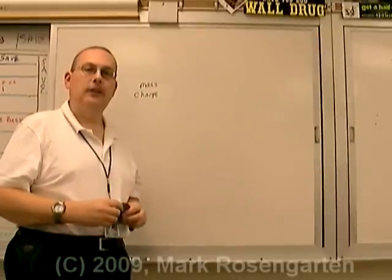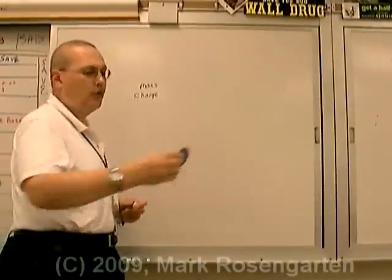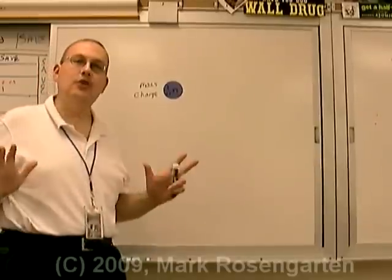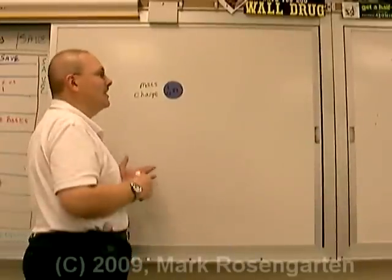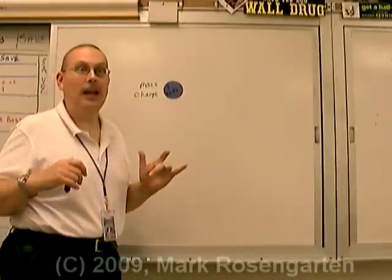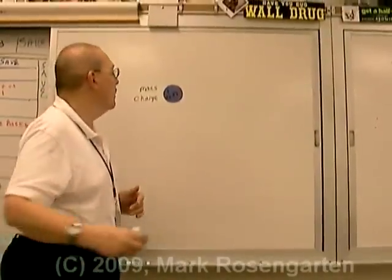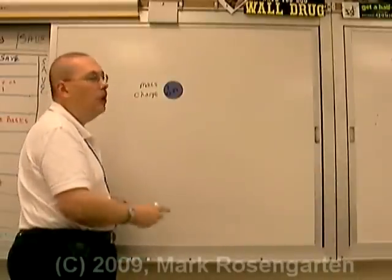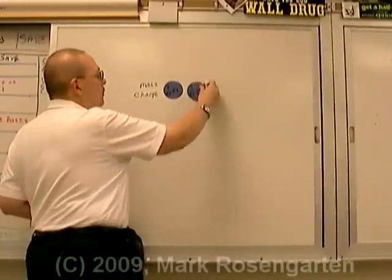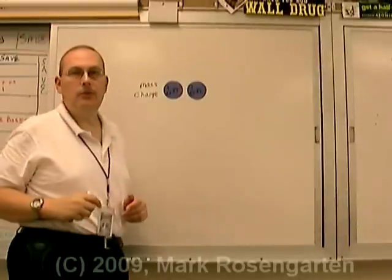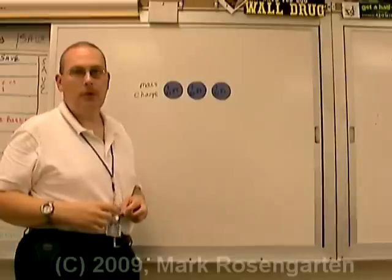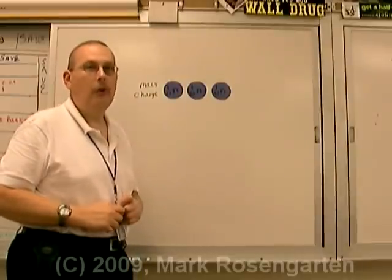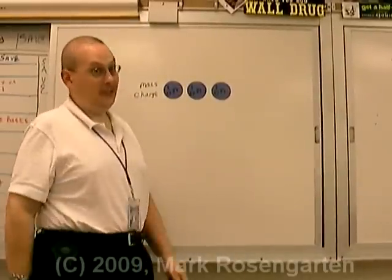The other particle that we can find in the nucleus is the neutron. The neutron has a neutral charge. It has no charge at all, hence the name neutron. It has the same mass as a proton, one atomic mass unit. Actually, technically, it's a tiny bit higher than that, but we just ignore that extra little bit. So one neutron would have a mass of one AMU and no charge. Two neutrons would have a mass of two AMUs, and again, no charge. And three neutrons have a mass of three AMU and a charge of zero again. Zero plus zero plus zero is still zero.